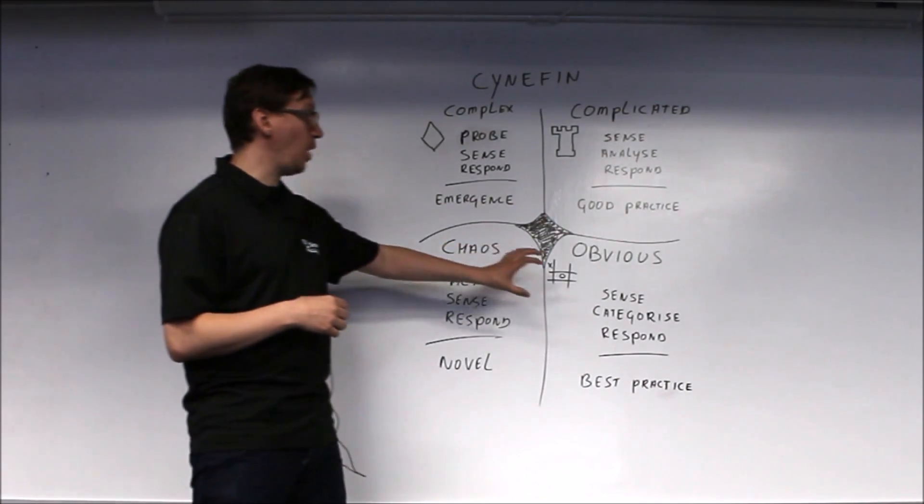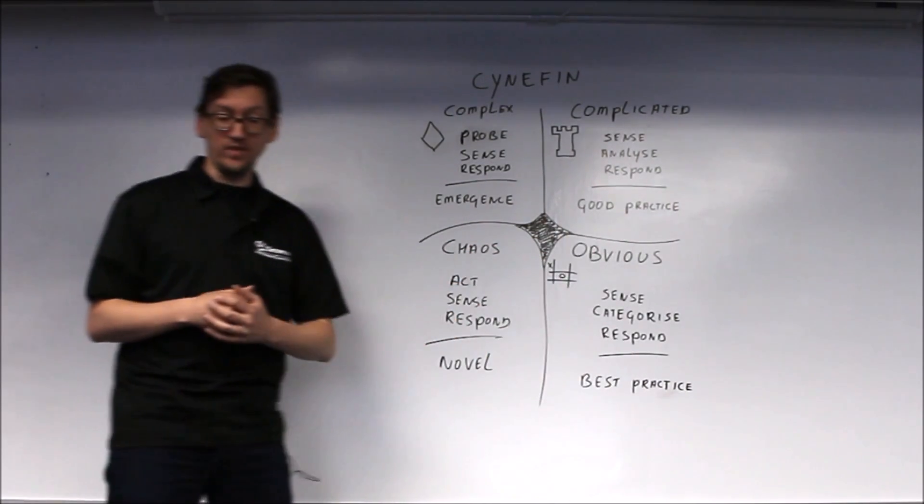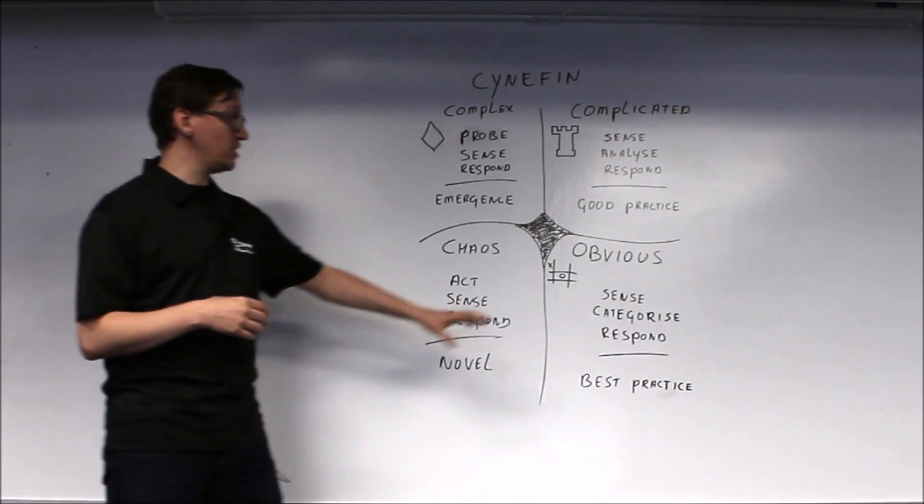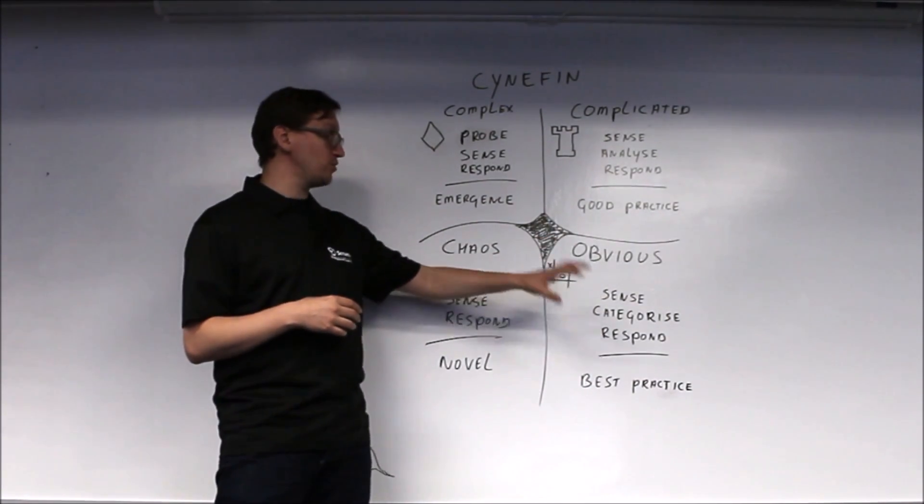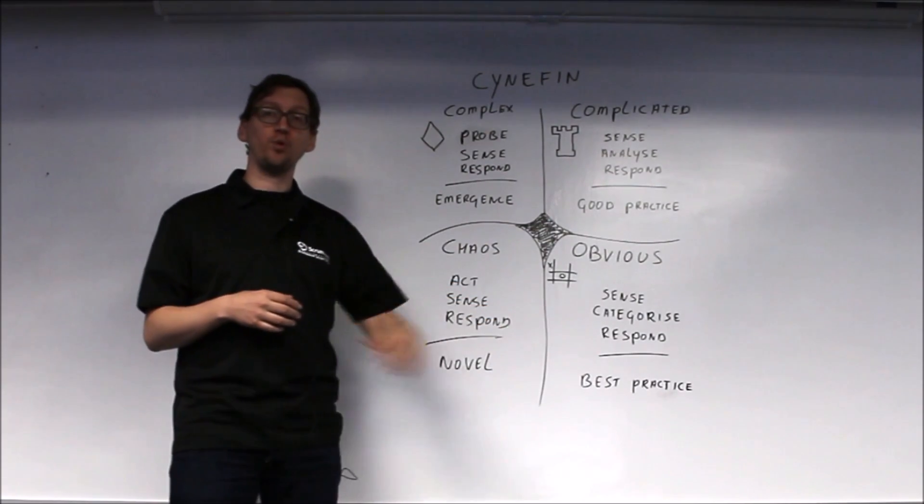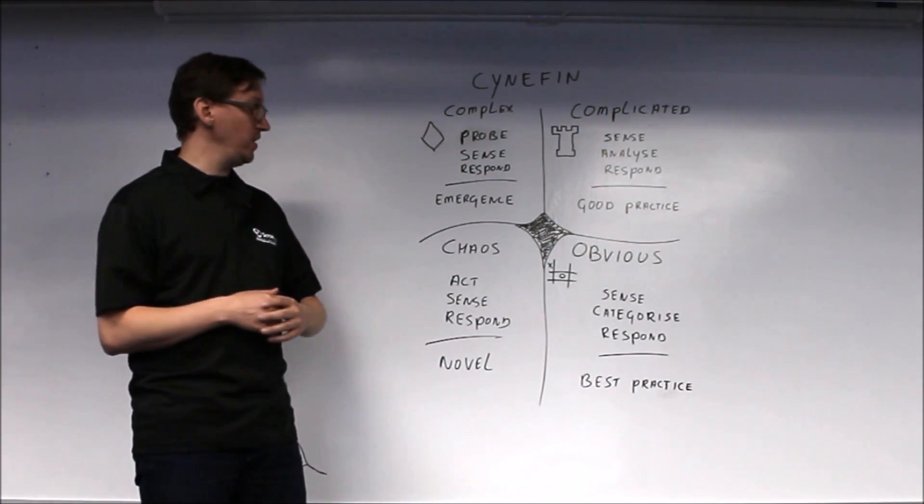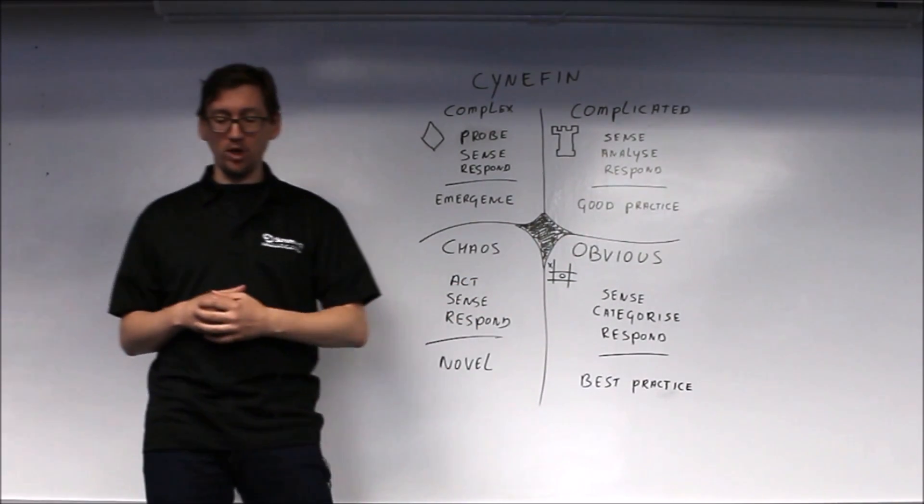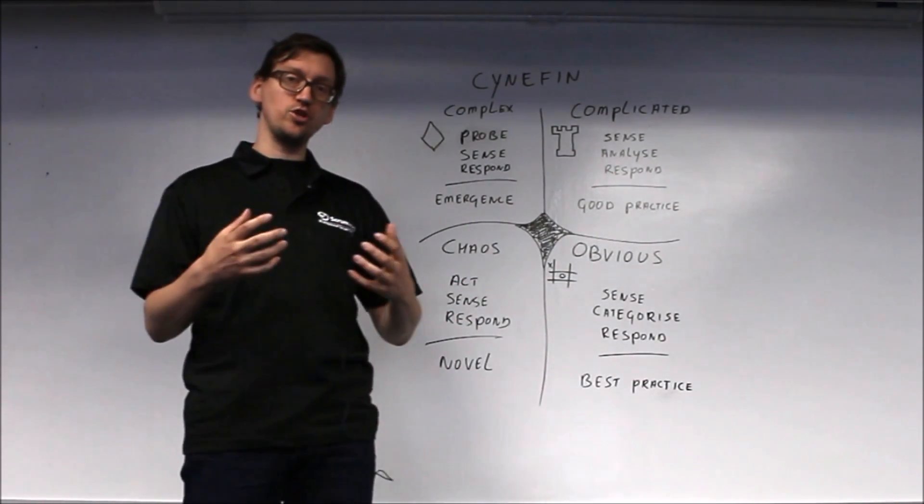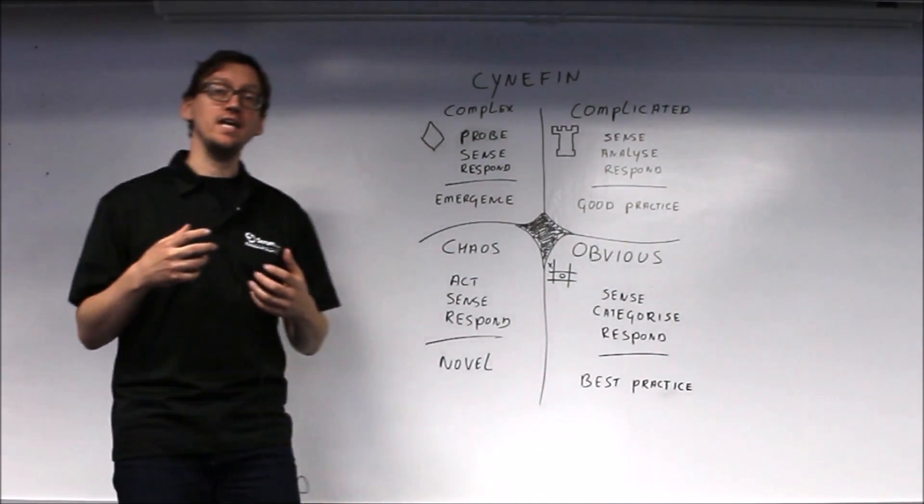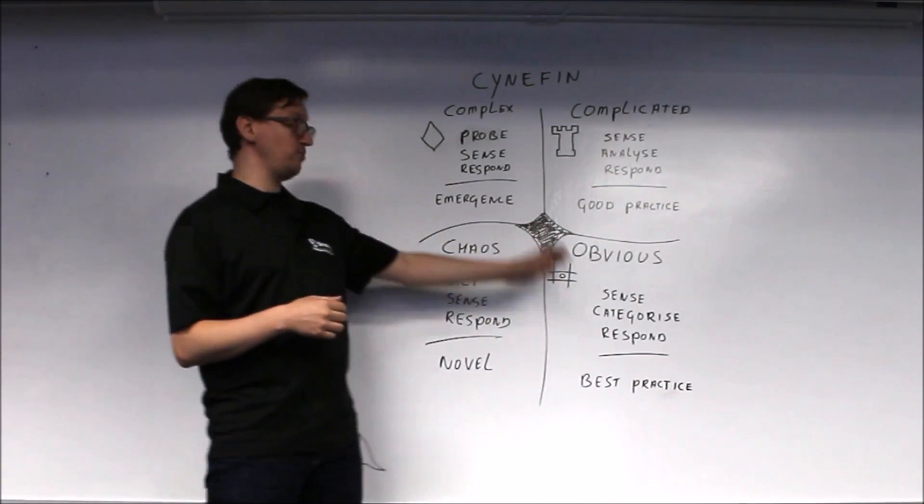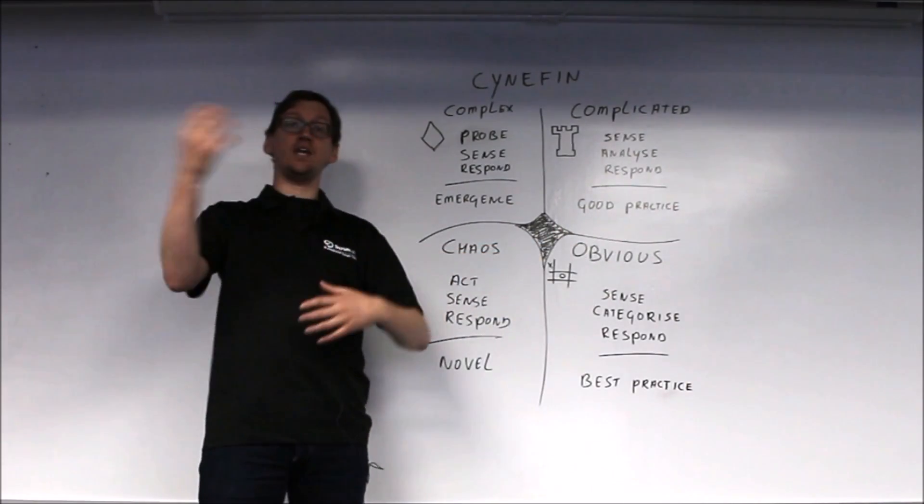The obvious problems—the analogy is tic-tac-toe. This is about figuring out what category, what type of problem this is, and then responding with a best practice. Obvious problems are obvious because the relationship between cause and effect is obvious. Everyone can see: if I do this, my opponent is going to do that, and then I'm going to do this.